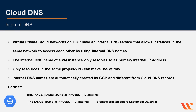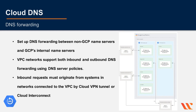The usual format for internal DNS names is: instance-name.zone.c.project-id.internal. For projects created before September 6th, 2018, the format does not include the zone. Please note that you cannot change these — they are created automatically by the Google Cloud Platform.